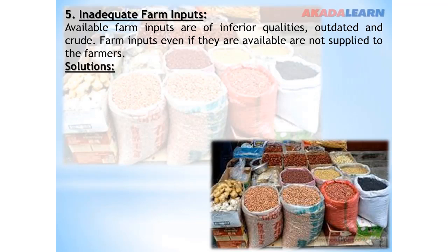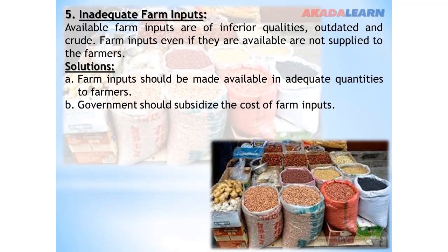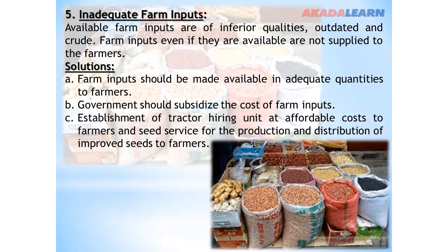Solution to this problem: Farm inputs should be made available in adequate quantities to farmers. Government should subsidize the cost of farm inputs. Establishment of tractor hiring units at affordable cost should be made available for farmers, and seed services for the production and distribution of improved seeds should be made available to farmers.